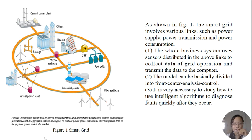Let's look at Figure 1, Smart Grid. As shown in Figure 1, the Smart Grid involves various links such as power supply, power transmission, and power consumption. The whole business system uses sensors distributed in the above links to collect data of grid operation and transmit the data to the computer. The model can be basically divided into front-end analysis and control. It is very necessary to study how to use intelligent algorithms to diagnose faults quickly after they occur.